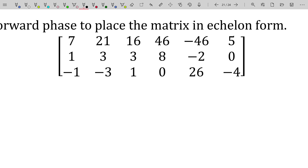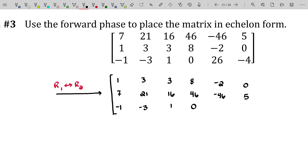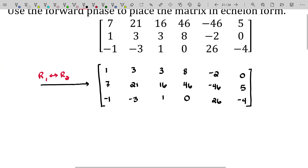Start with the leftmost non-zero column — that would be this column right here. We're going to choose one of those numbers to be our pivot: seven, one, or negative one. Personally, I like to deal with the one as my pivot, so I'm going to swap rows two and one. Notice how I wrote that out — I went from left to right, row by row. It's a good habit to work row by row when writing down a matrix.